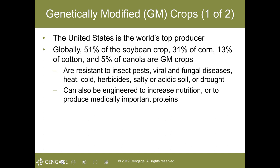Genetically modified crops are widespread globally. Over half of the global soybean crop is modified, approximately a third of the corn crop is modified, approximately 30% of the cotton crop is modified, and approximately 5% of canola is genetically modified. These crops are resistant to fungal diseases, viral pathogens, insect pests, heat, cold, herbicide, and soil conditions such as acidity, salinity, or drought.